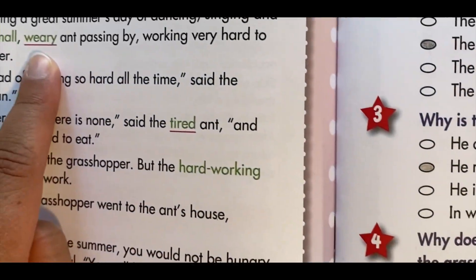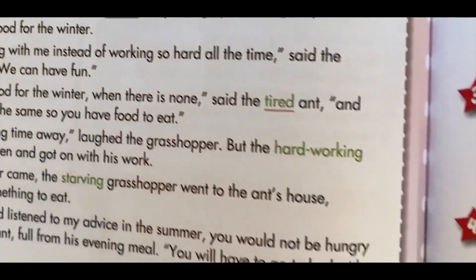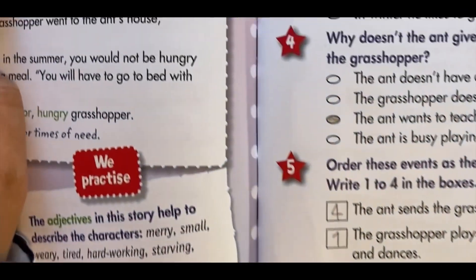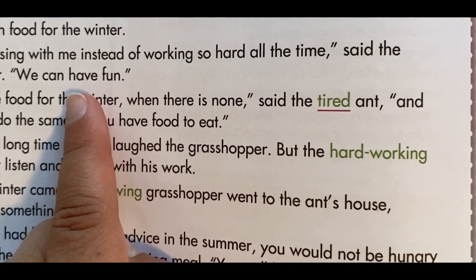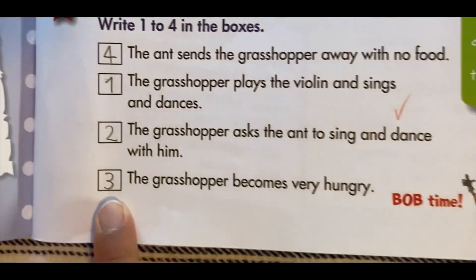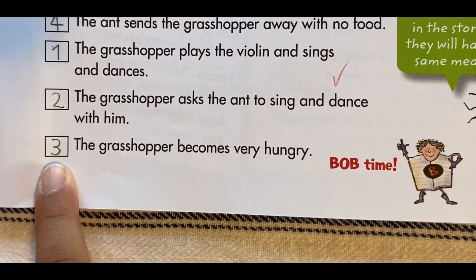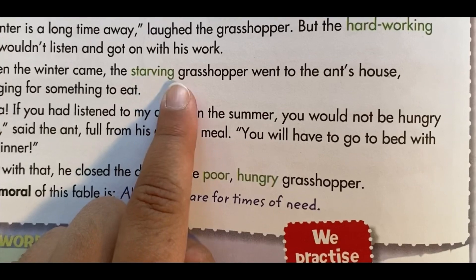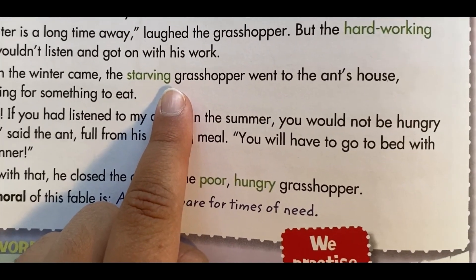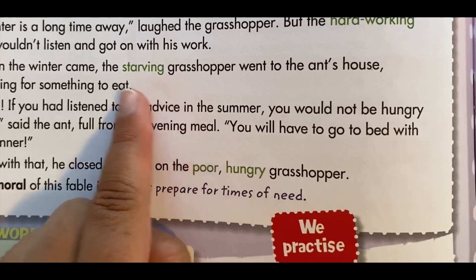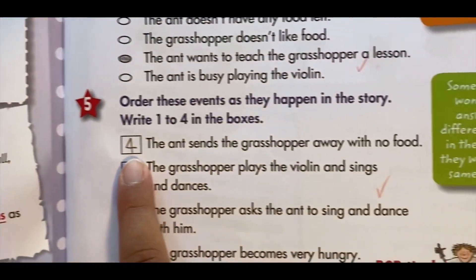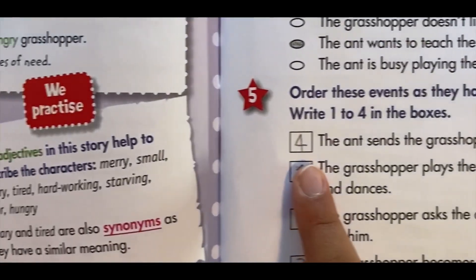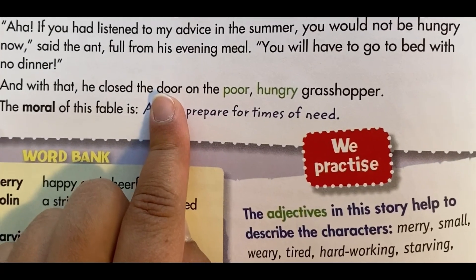I picked this box as the first one because it is the first thing that happens in the fable. I picked this box as the second one because it is the second thing that happens in the fable. I picked this box as the third one because the text says 'the starving grasshopper,' which I can infer means the grasshopper became very hungry when winter came. I picked this box as the fourth one because it is the last thing that happens in the fable.